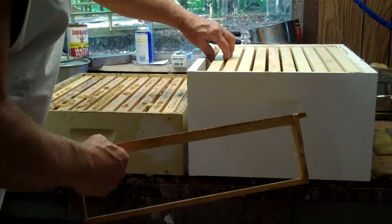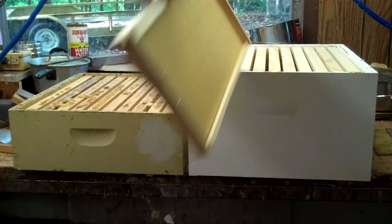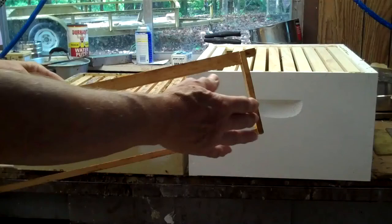This is a deep brood chamber. This is a shallow brood chamber. Here's a frame already put together, ready to go in the deep brood chamber. This is a frame for the shallow, and we will tell you how to put foundation in here if you're harvesting comb.